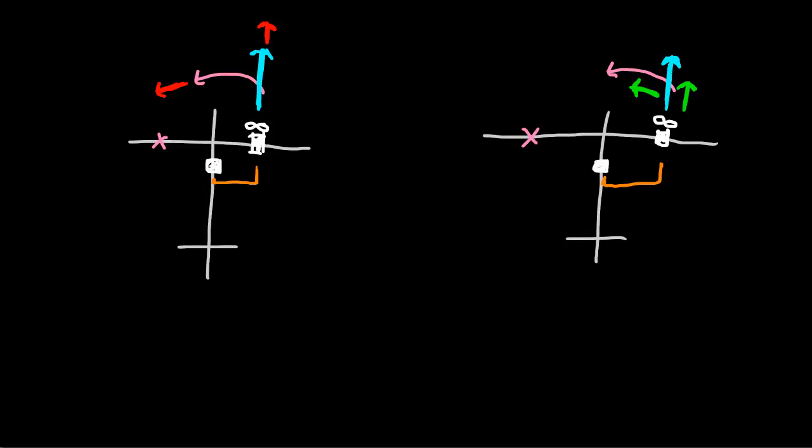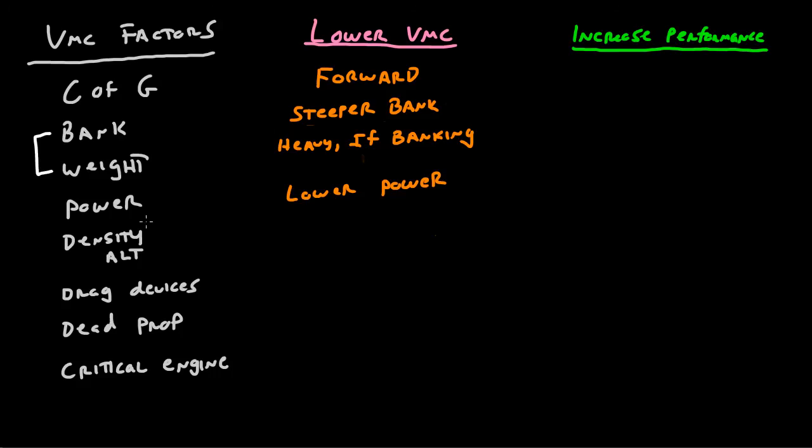And so that is how power affects VMC. If you lower the power, you lower the ability of the engine to turn the aircraft, and so your VMC speed gets a lot lower.